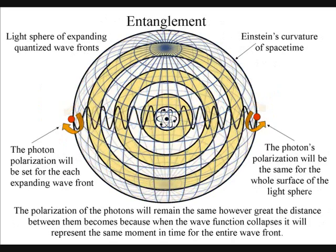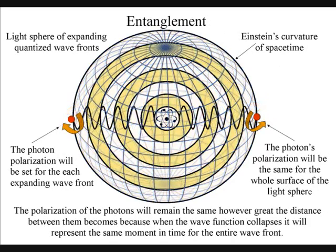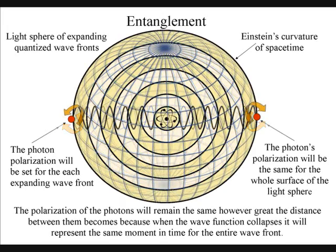The polarisation of the light will be the same for the entire surface of the light sphere, creating quantum entanglement and the symmetry and geometry of space-time.